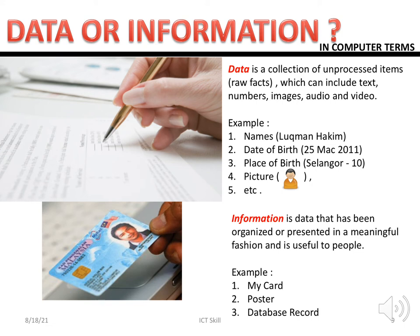Information is actually the combination or collection of data grouped together to represent a meaningful design. For example, a birth certificate — on it you can see a name, certificate number, address, mother's and father's names, date of birth, and place of birth. Everything together on that document is what we call information.